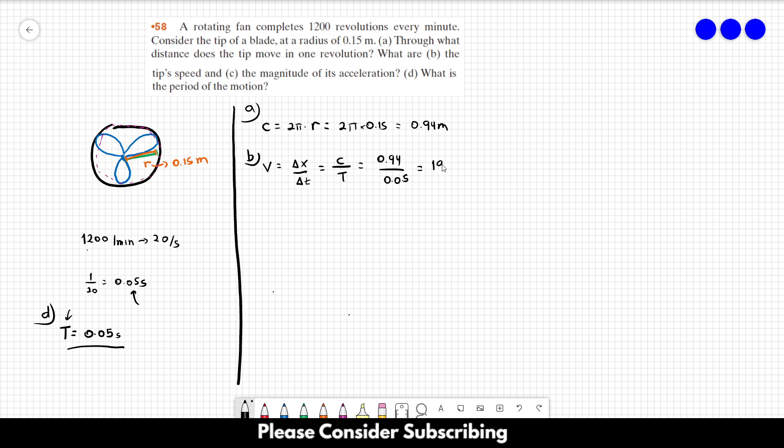Letter c: The magnitude of its acceleration. The acceleration is the centripetal acceleration, which can be calculated by v squared over r. You know the value of r, you know the value of v which is 19, and r is 0.15. So this is going to be 2.4 times 10 cubed meters per square second.